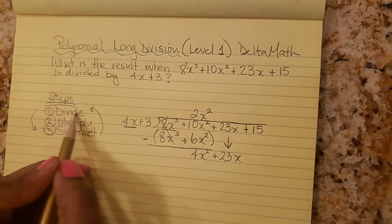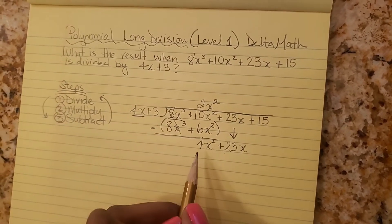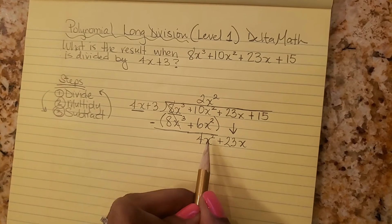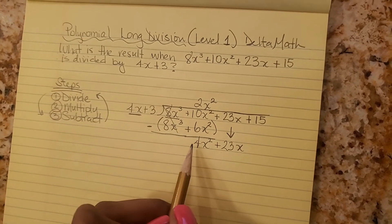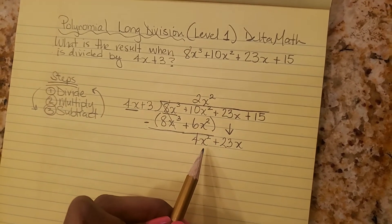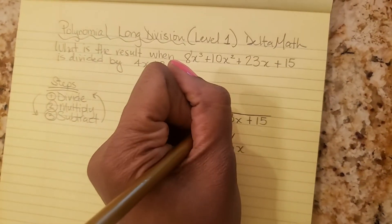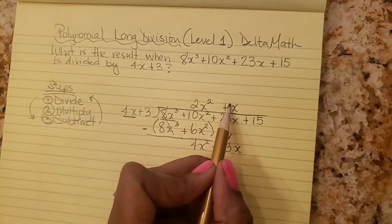And then we repeat. We're going to divide 4x into 4x squared. So 4x times what will give me 4x squared? 4x times x. So we write our plus x right up here above the like term.